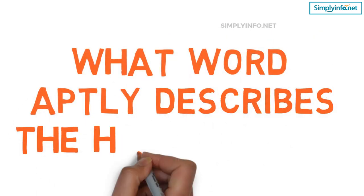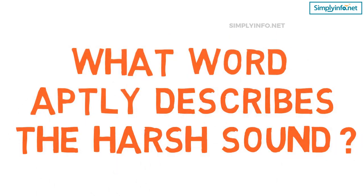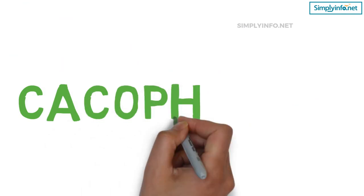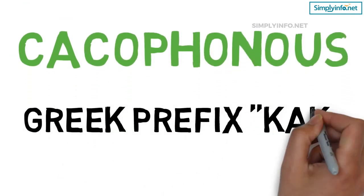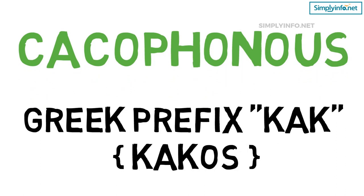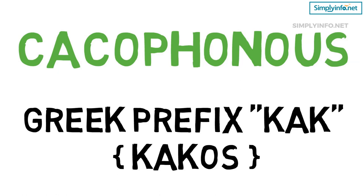What word aptly describes a harsh sound? Cacophonous. Cacophony is itself a harsh-sounding word, and is the only one that exactly describes the unmusical, grating, ear-offending noises you are likely to hear in man-made surroundings. Cacophony comes from the Greek prefix 'kako,' from 'kakos,' which means bad, and 'phone,' which means sound or voice — so it means bad sound.